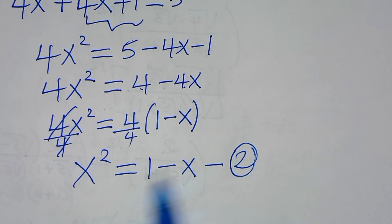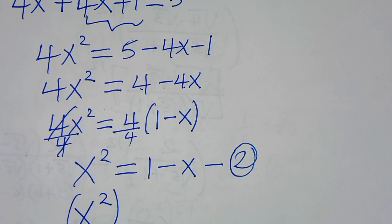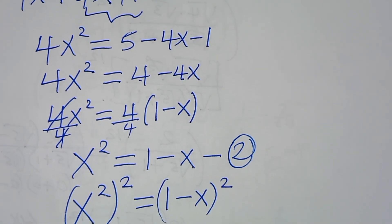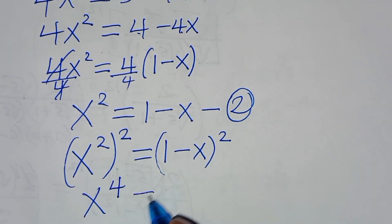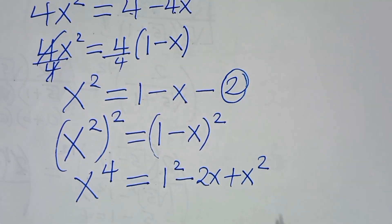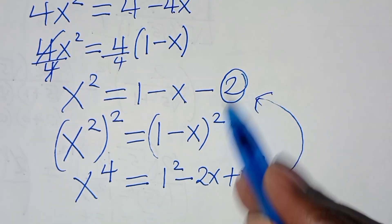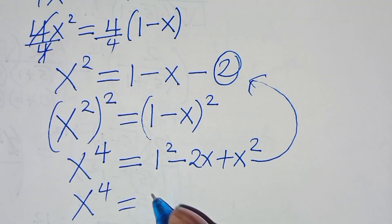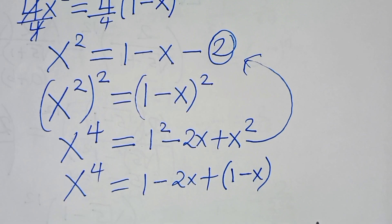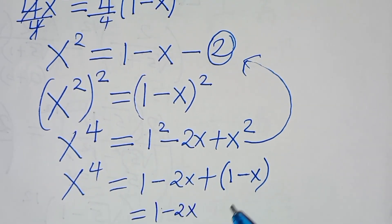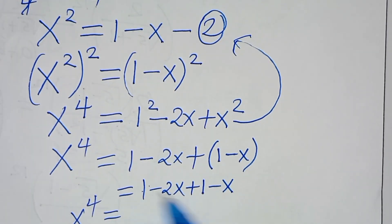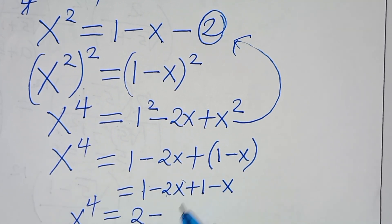The next step is to expand x squared to power 2: x squared squared equals 1 minus x squared. So x to power 4 equals 1 squared minus 2x plus x squared. Substituting equation 2, x squared equals 1 minus x, we get x to power 4 equals 1 minus 2x plus 1 minus x, which gives 2 minus 3x.